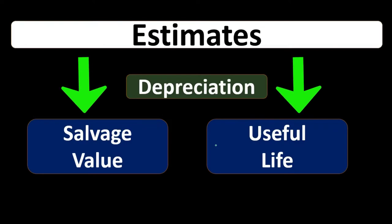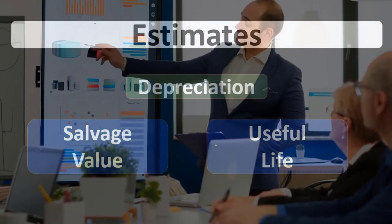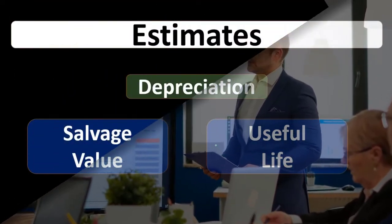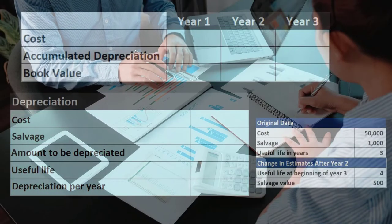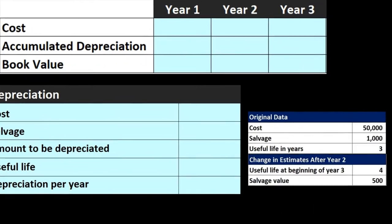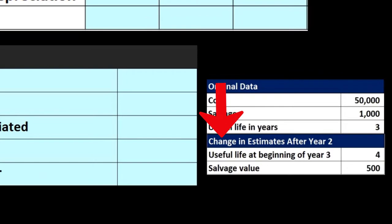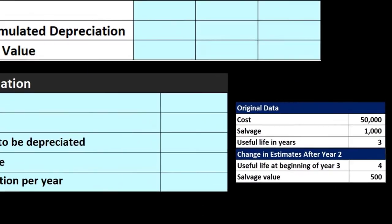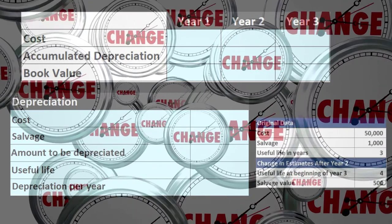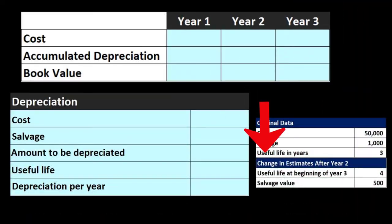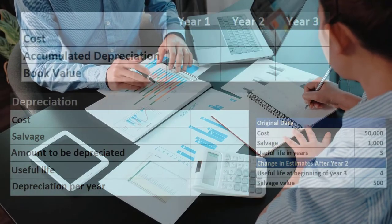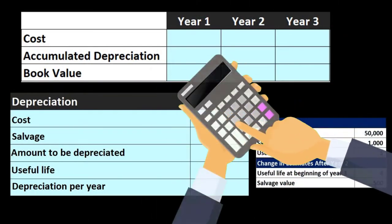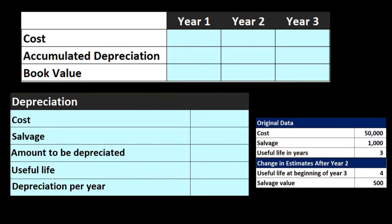If there is a significant change in these factors, we go back and consider how to deal with the new information. When recording a change in estimate, we typically do it at the point in time the change has taken place, going forward. We typically won't go back and change the estimate for prior periods that have already passed, because it would be difficult to reopen closed books, change the income statement, and adjust retained earnings. So we draw a line and make the calculation to change the estimate at this point in time, moving forward.